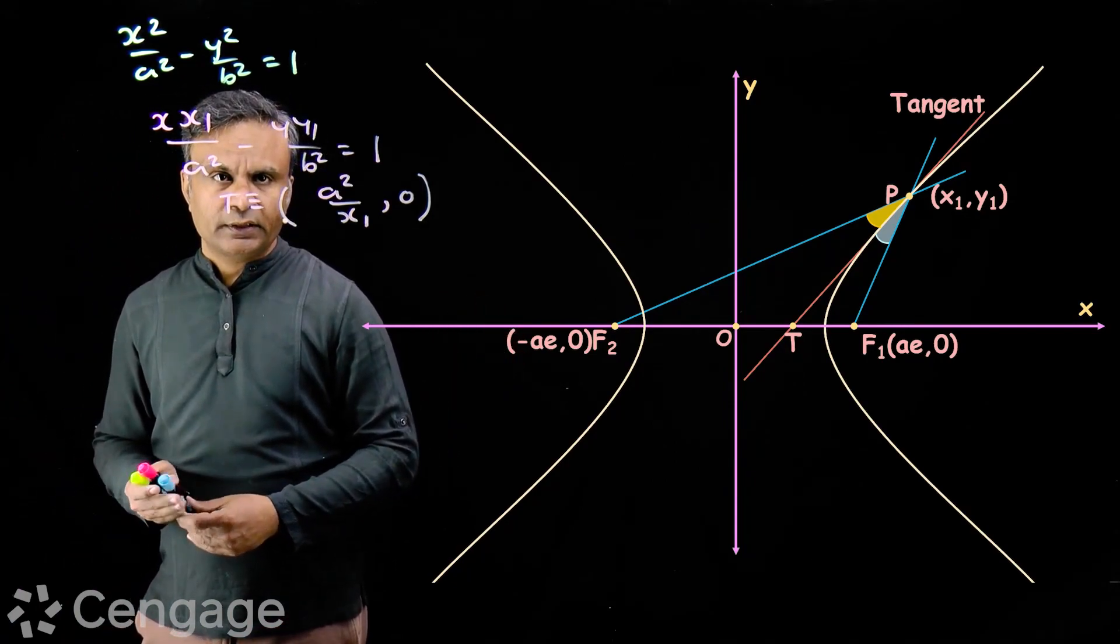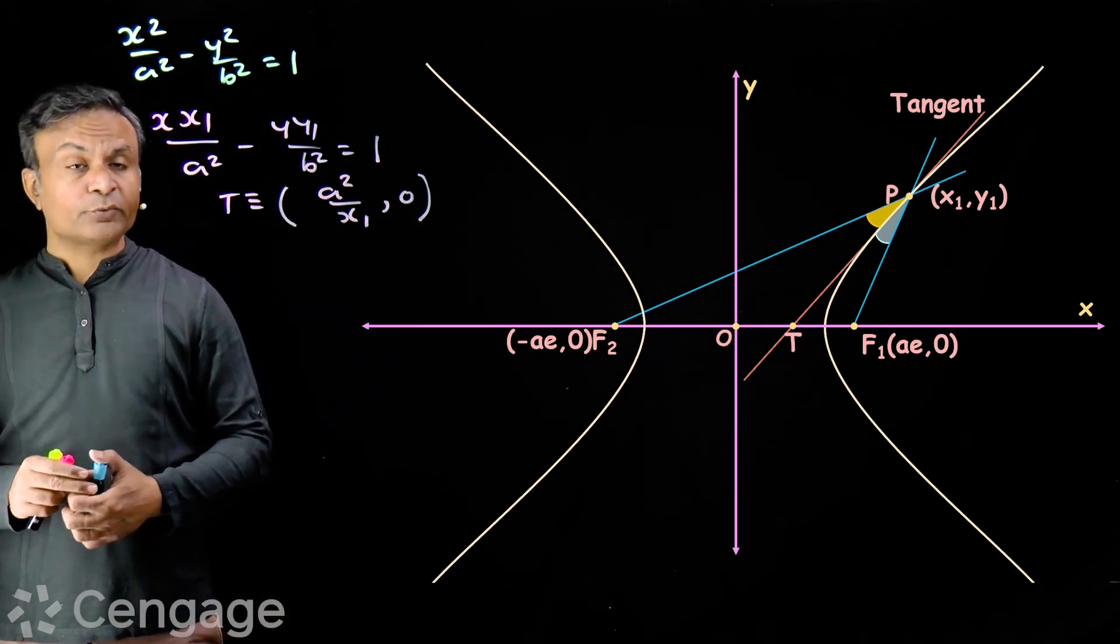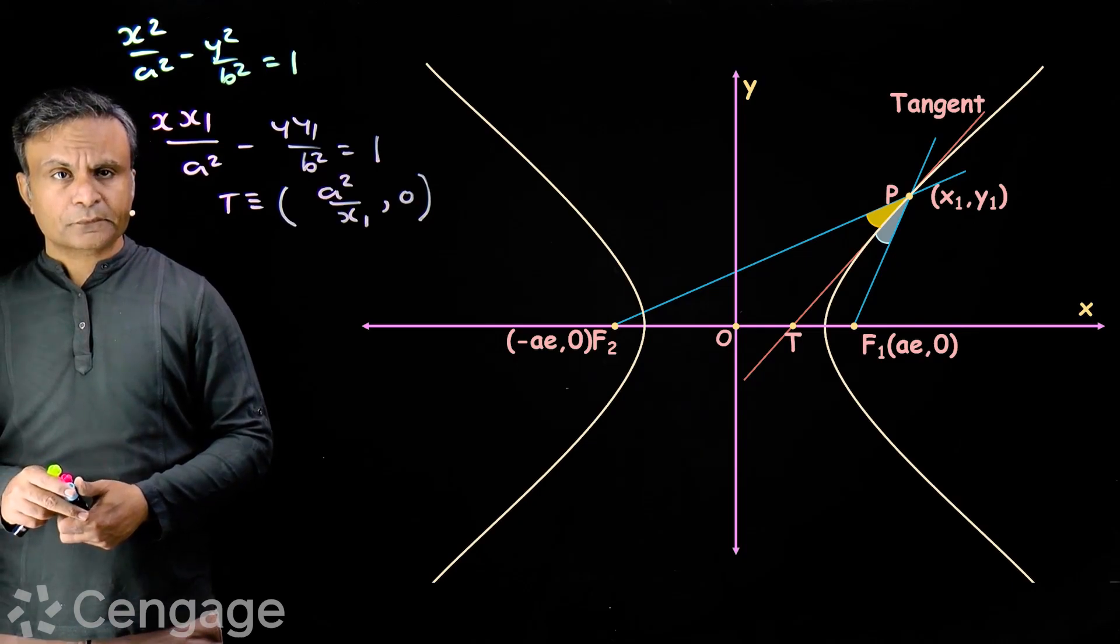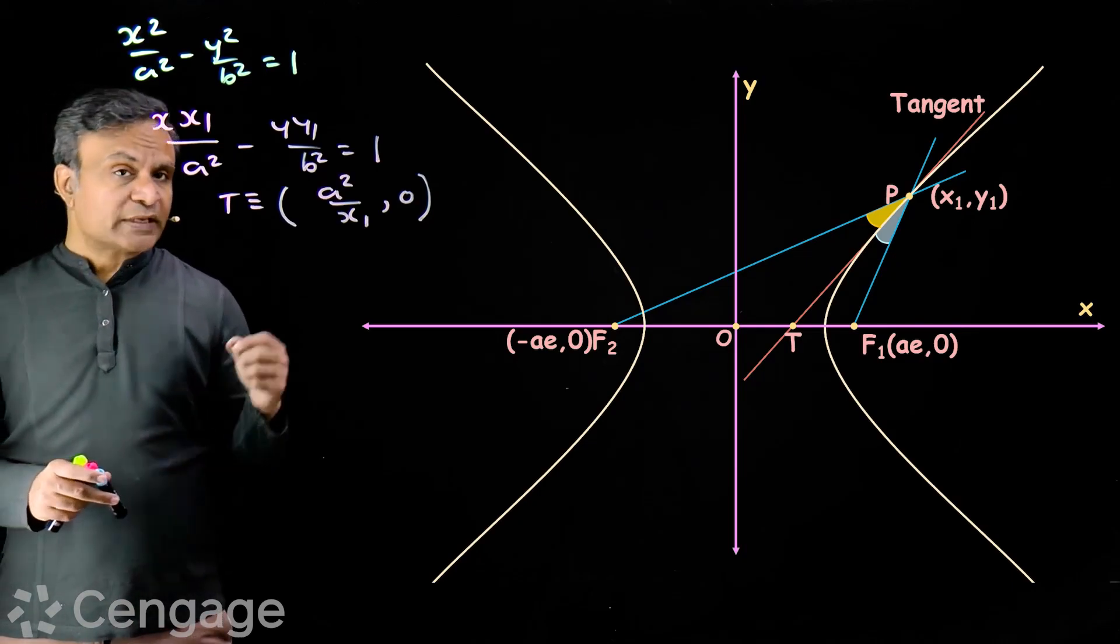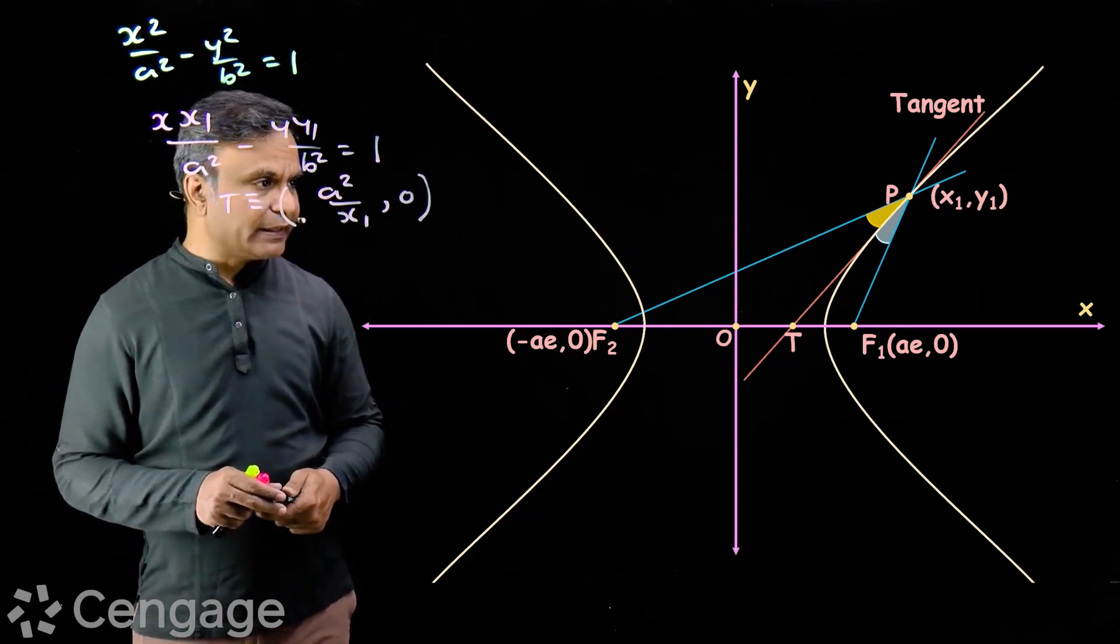How can we prove this property? Which theorem can we use? We can use angle bisector theorem. We consider triangle PF1F2.